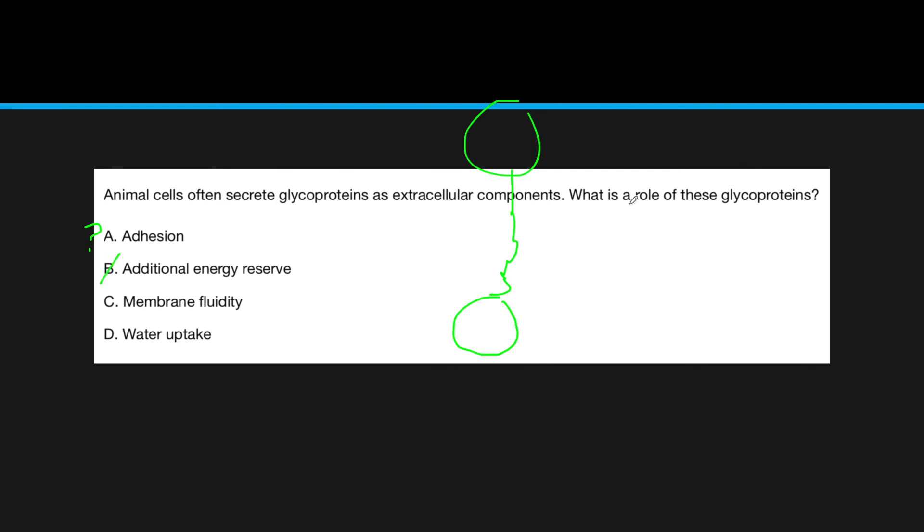Additional energy reserve is trying to trick you with glycogen, which is a form of sugar, but that's not what we're looking for. Membrane fluidity refers to phospholipids or cholesterol, not the proteins. Water uptake, as I said before, is that protein aquaporin that allows water to pass through. So it's adhesion.